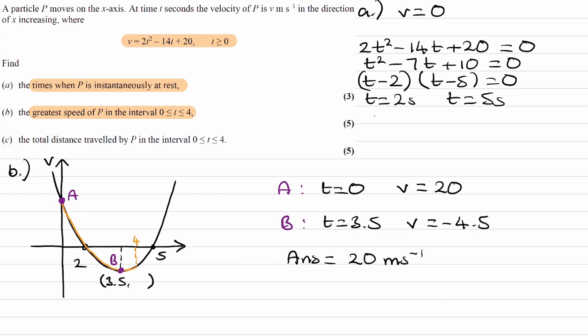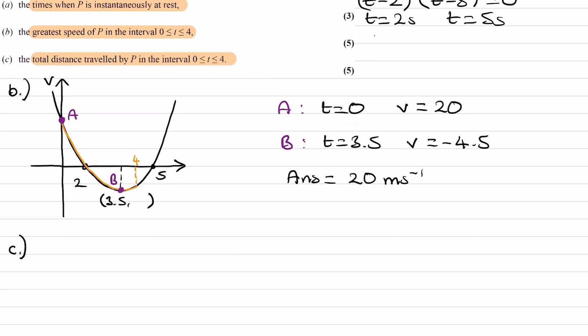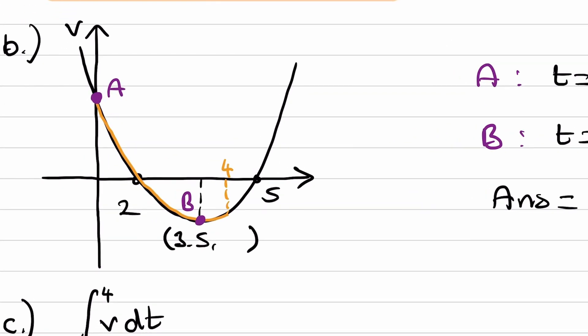Now for part C. We want to find the total distance traveled by P in the interval of 0 to 4 seconds. To find out distance, we want to integrate velocity over a certain time interval. What we wouldn't be doing here is integrating between 0 and 4. That wouldn't work. And the reason that wouldn't work is because we have both positive and negative velocities in the interval of 0 to 4 seconds. So why does that matter? If I zoom into this graph...